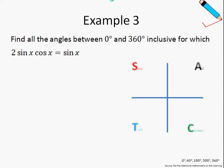In example 3, we are asked to find all the angles between 0 and 360 degrees for which this equation is true. This means that the range of x is between 0 and 360 degrees. Just take note that if the question uses the word between, then we will not include the endpoints which are 0 and 360.